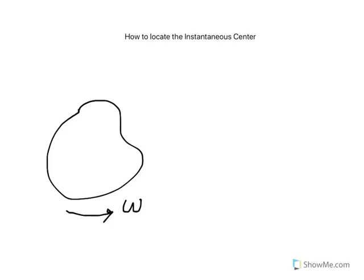We need, in general, the velocity of two points on the body. Let's say you have point A here and point B here, with velocity of A given as a vector like that, and velocity of B something like this.